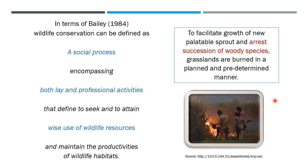Now comes the professional issue of how to burn the grasslands without affecting other animals, when to burn them, and which specific areas to burn. These are issues that cannot be decided by a layman — this is an example of professional activity in wildlife conservation.